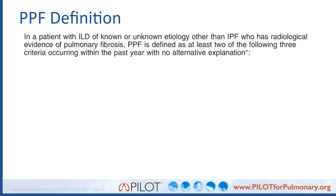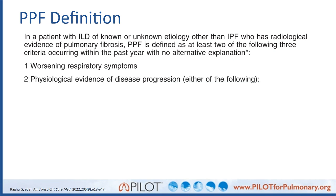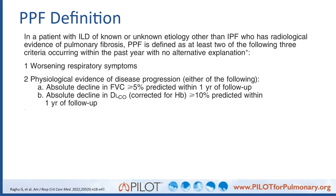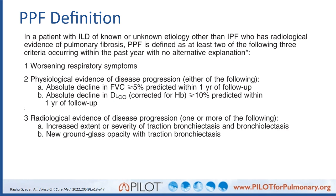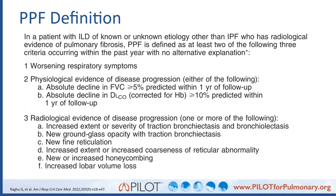The definition of PPF applies to a patient with an ILD of either known or unknown etiology — critically, a non-IPF patient — who has radiologic evidence of pulmonary fibrosis, and who satisfies at least two of the following three criteria within the last year: one, worsening respiratory symptoms; two, physiologic evidence of disease progression — either an absolute decline in FVC ≥5% or an absolute decline in DLCO ≥10% predicted within the last year; or three, specific radiologic findings on CT, including new ground glass opacities with traction bronchiectasis, new traction bronchiectasis, new reticulation, new or increased honeycombing, or increased coarseness of reticular abnormalities.